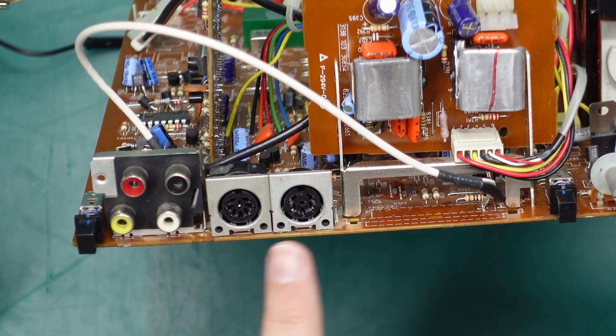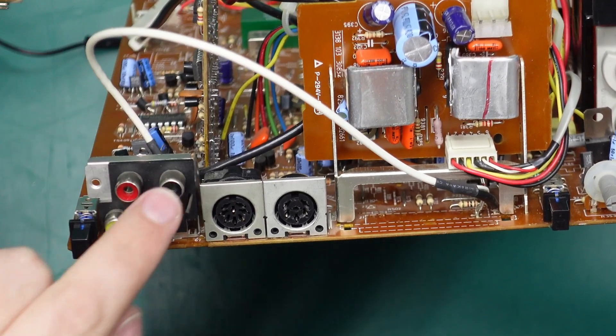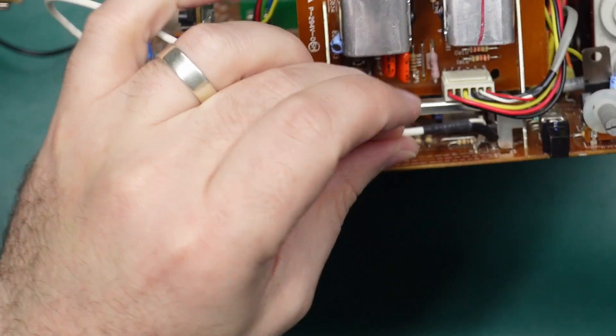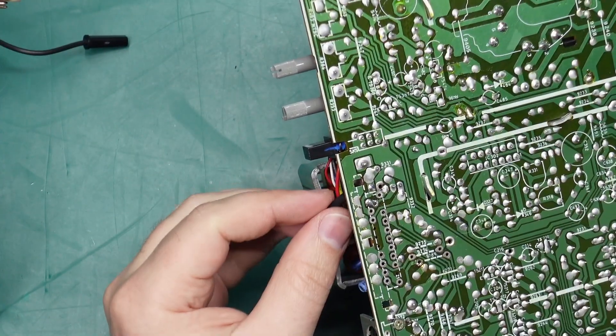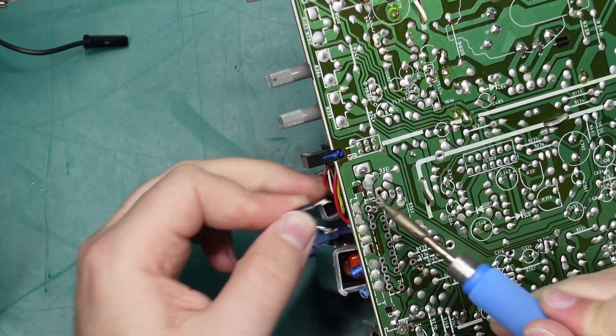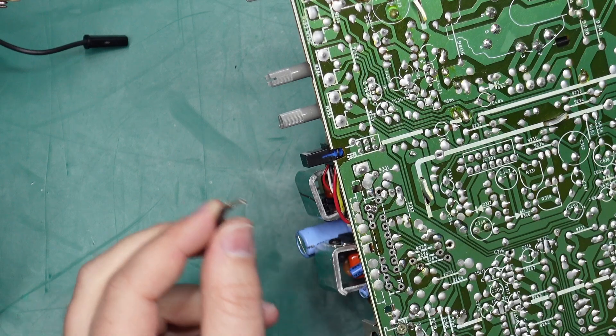Now because this is a stereo model there's actually a little bodge wire here that goes from the right channel audio over to where the SCART connector is, so we do need to desolder this wire. Cool, we'll reconnect that in a better place later.